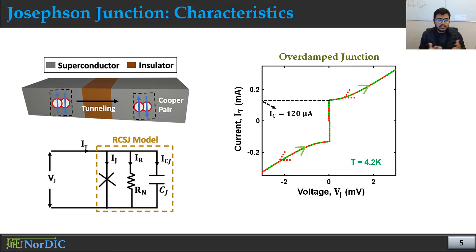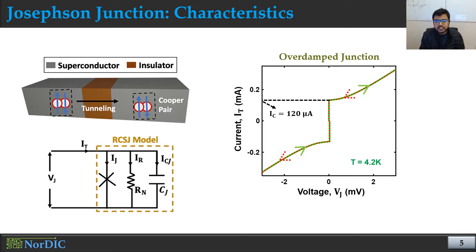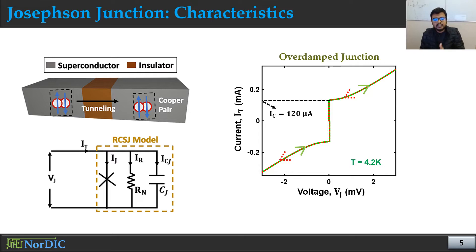Now let's talk about the device characteristics of Josephson Junction. The most famous way to explain the characteristics is the RCSJ model, shown in the bottom left. We have three parallel branches: the first, represented by a cross sign, is the ideal Josephson Junction representing lossless conduction; the second is the resistive branch representing normal metal behavior if the temperature exceeds the critical temperature; and the third is the capacitance representing the device capacitance.